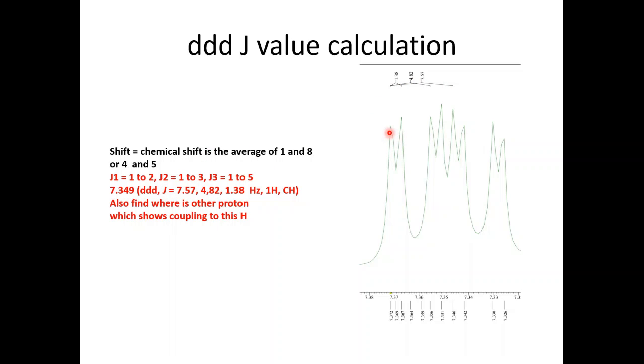Subtract these two values from each other and multiply by the spectrophotometer frequency. You will get the J value. 7.37 minus by this one, 7.356. You will get J2.